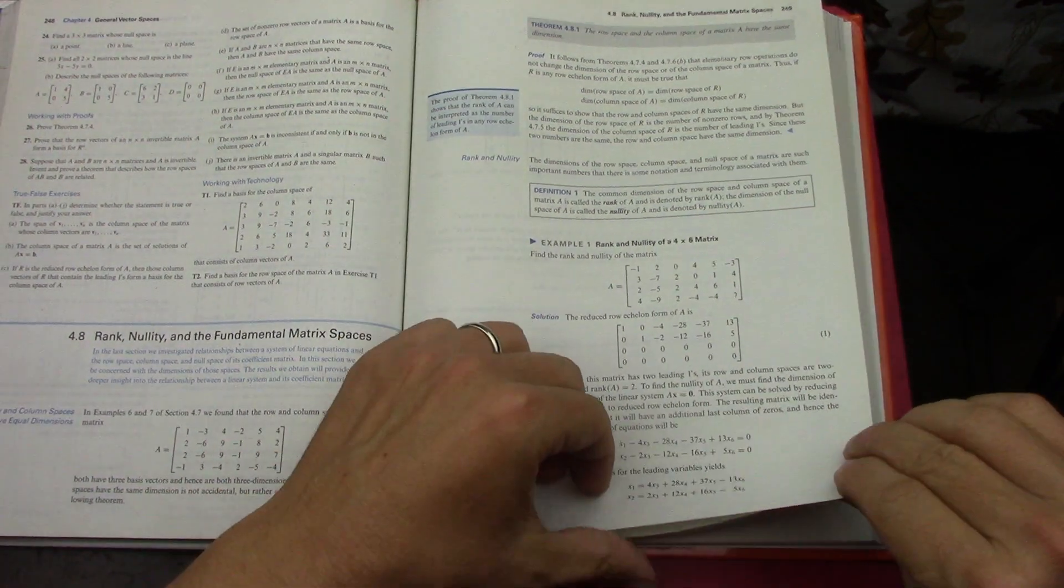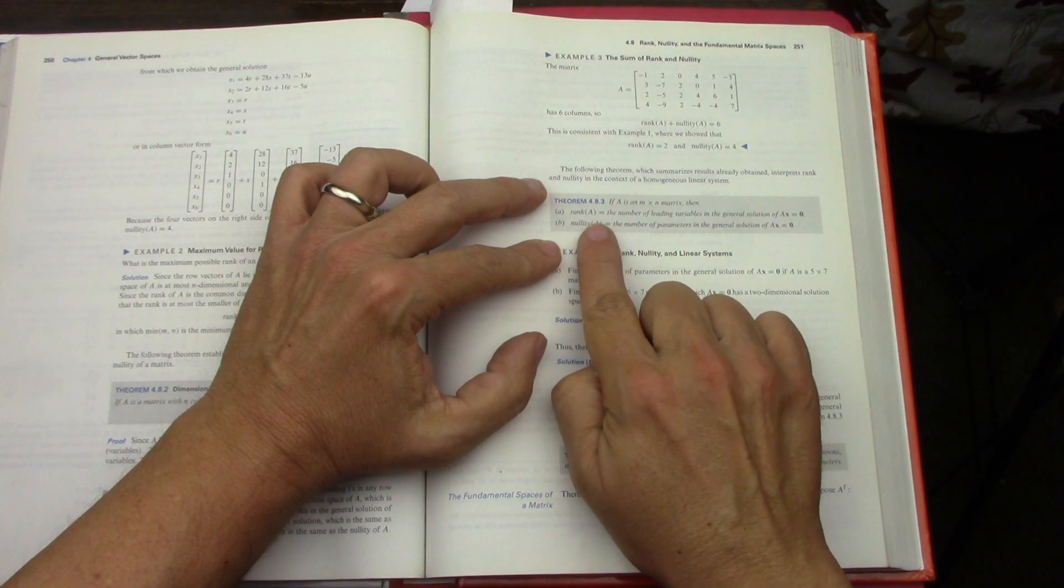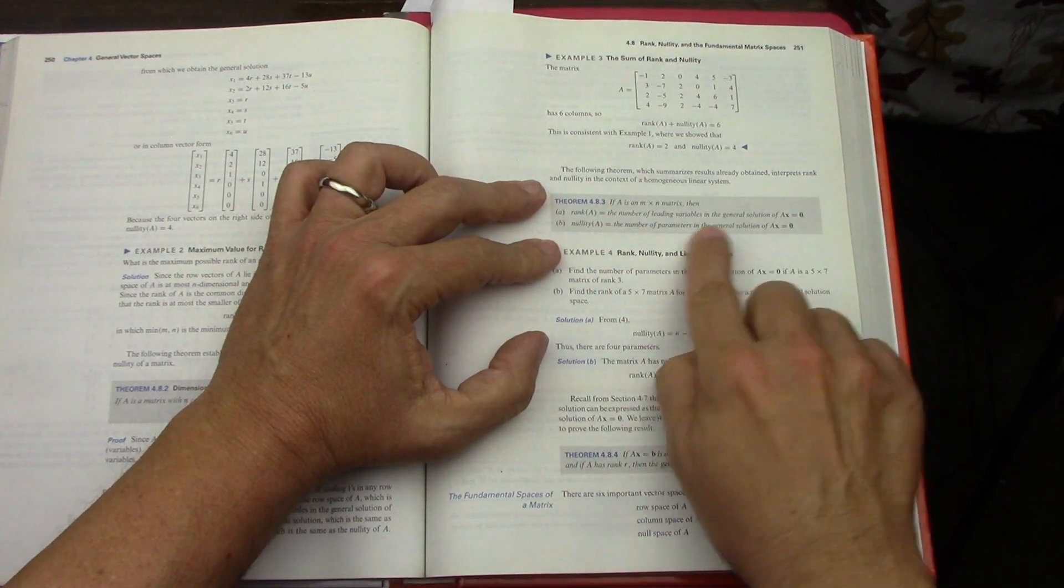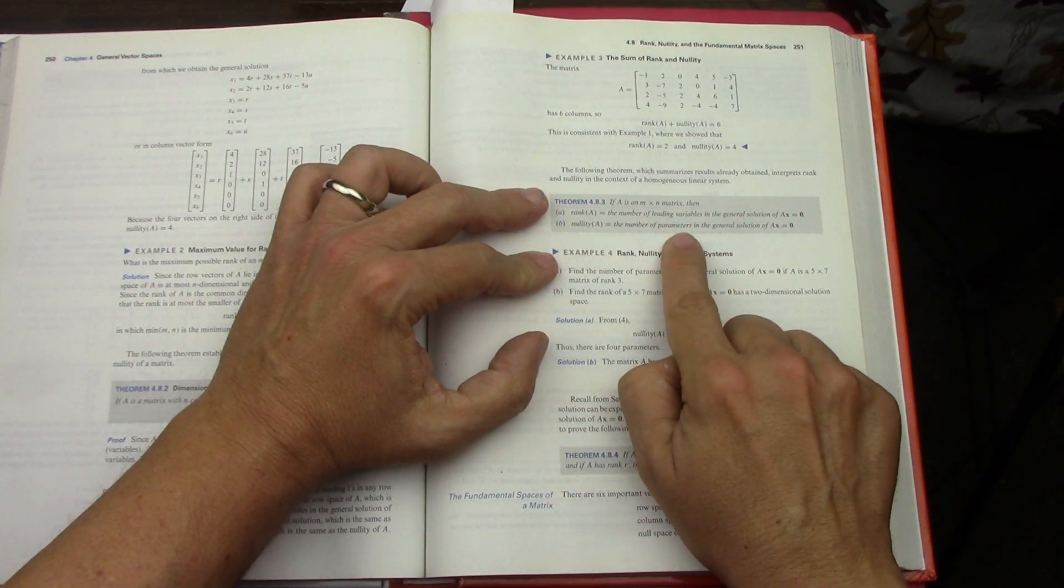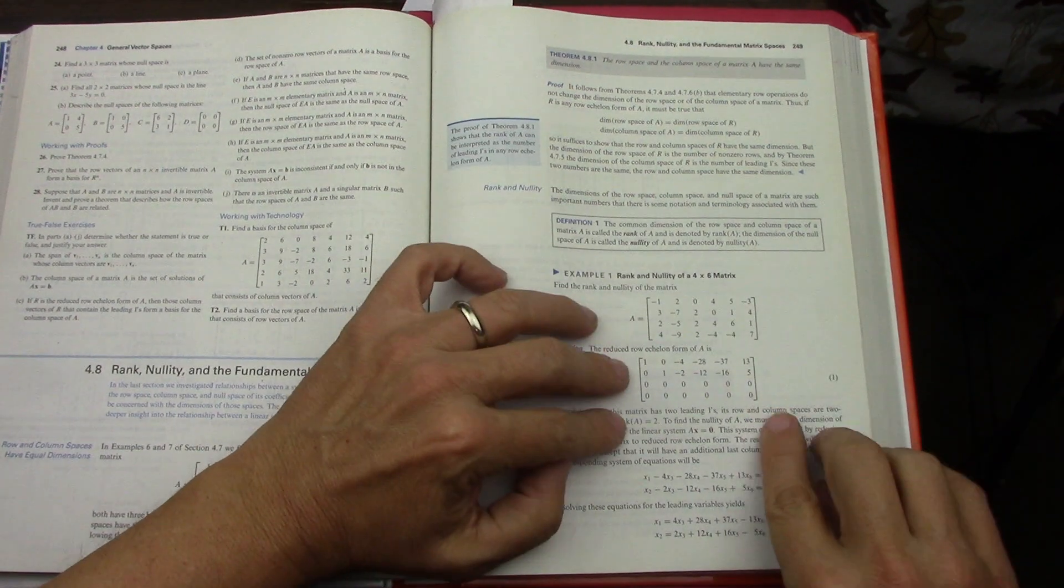The rank of the matrix is the number of leading variables and the nullity is the number of parameters in the general solution. So of course you look in here.